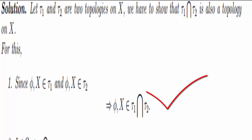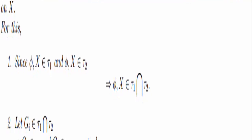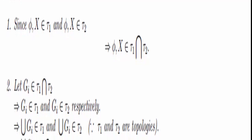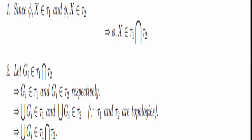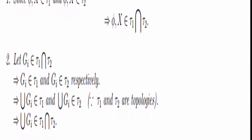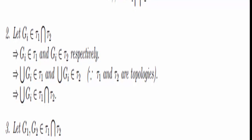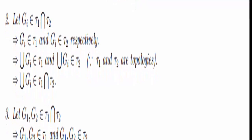For the second condition, we have to show that the union of any number of open sets in the intersection is also in the intersection. Take any collection of open sets in τ₁ ∩ τ₂. For each α in our index set I, we have O_α. If it's in the intersection, then O_α is in τ₁ and O_α is in τ₂.